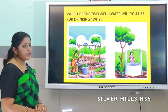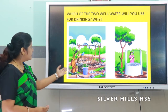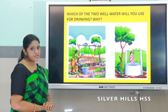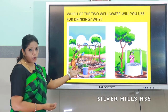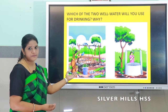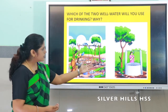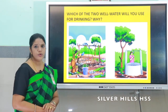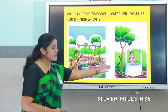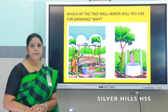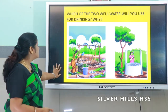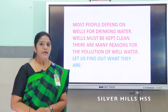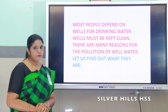Dear children, kindly observe these two pictures. Which of the two well waters will you use for drinking, and why? Observe the first picture and the second picture. In the first picture, the well is not covered with a proper net and protective fencing is not there. In the second picture, the well is covered with a net and protective fencing is there. So which well water will you use? Absolutely correct — the second one. We should keep our well water clean.